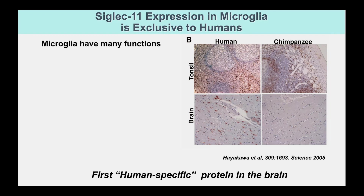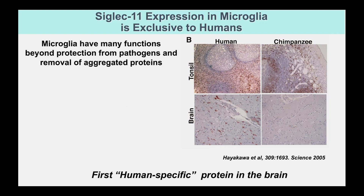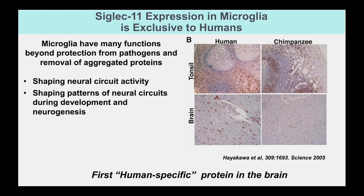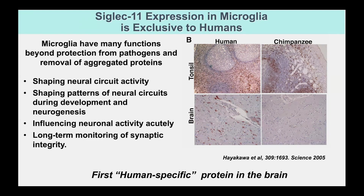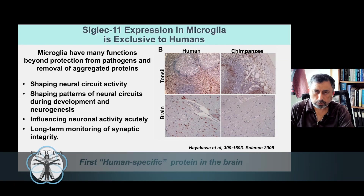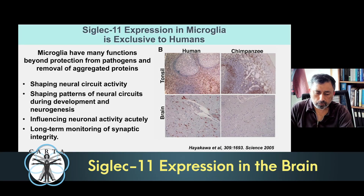These microglia are sort of like the macrophages of the brain, but they have many other functions. They don't just clean up messes or bacteria. They have many functions beyond pathogen protection — removing aggregated proteins, shaping neural circuit activity, effects on development and neurogenesis, influencing neural activity acutely, and long-term monitoring of synaptic integrity. So they do a lot of things besides just the macrophage function.